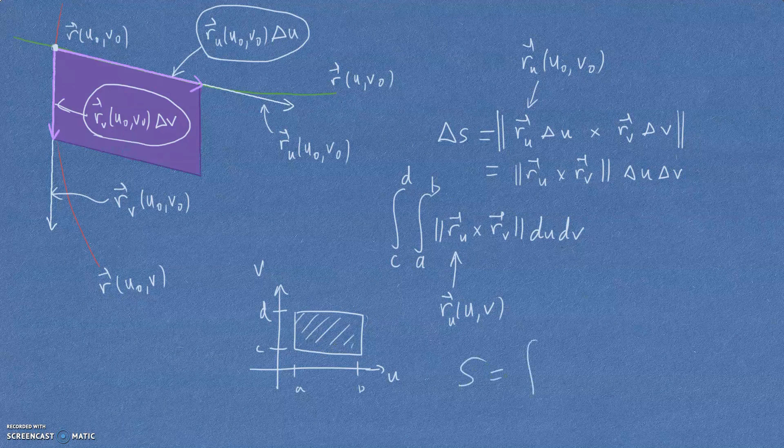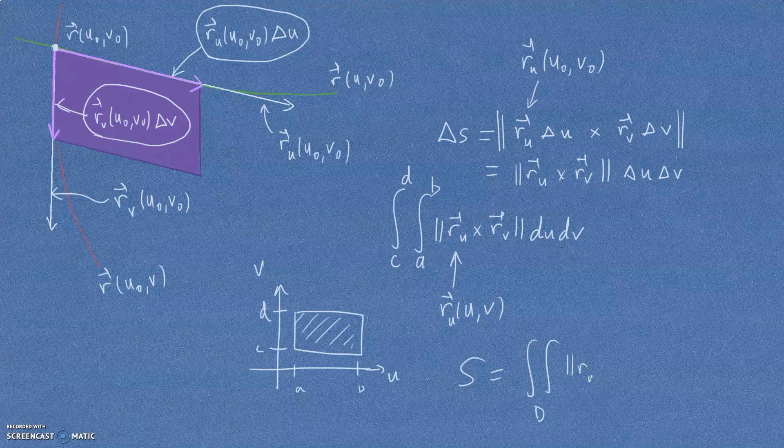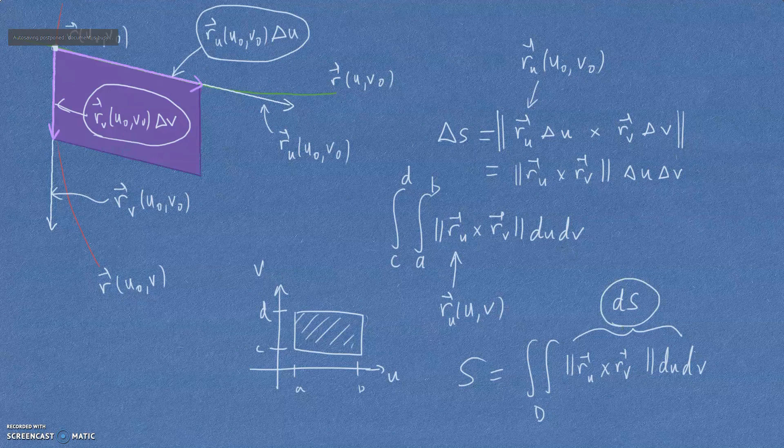So to get surface, you integrate. You do a double integral over whatever domain you have in your U, V space. R_U cross R_V, dU, dV. And that's the answer. Now, this quantity here, we'll call that a surface area element and can be used for other sorts of integrals that we can see another time.